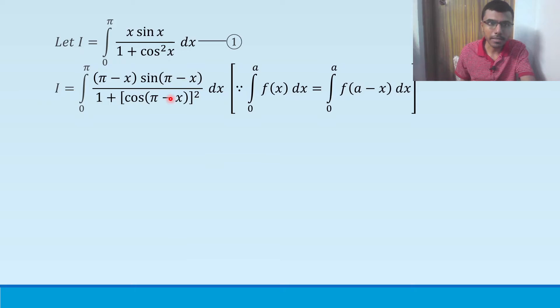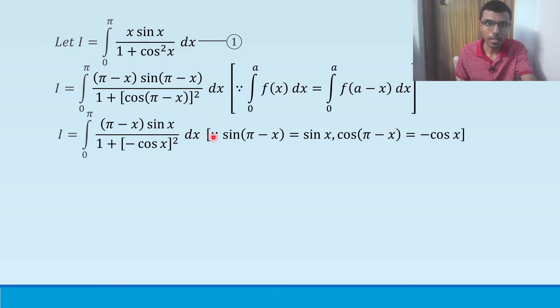Next, pi minus x keep it as it is. Sin of pi minus x is sin x and cos of pi minus x is minus cos x. In case you forgot the basic trigonometry, sin of pi minus x is sin x and cos of pi minus x is minus cos x. So sin of pi minus x just came as sin x.